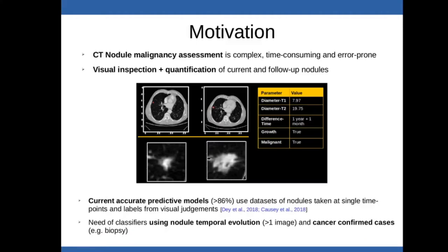Lung nodule malignancy assessment is a complex, time-consuming and error-prone process due to radiologists being required to visually screen through the large number of axial slices that compose a CT study to detect and quantify potential nodules. Then they go to previous CT studies and repeat the same process to obtain a comparative evolution of the nodules to determine its malignancy. Currently, accurate predictive classification models have been reported, but they are built on data from single time point nodules and labels obtained from the visual and subjective judgments of different experts.